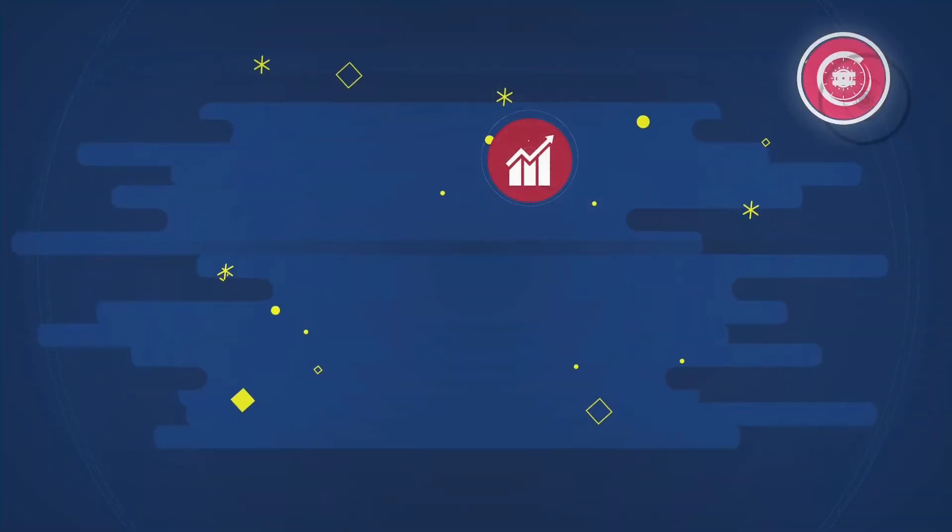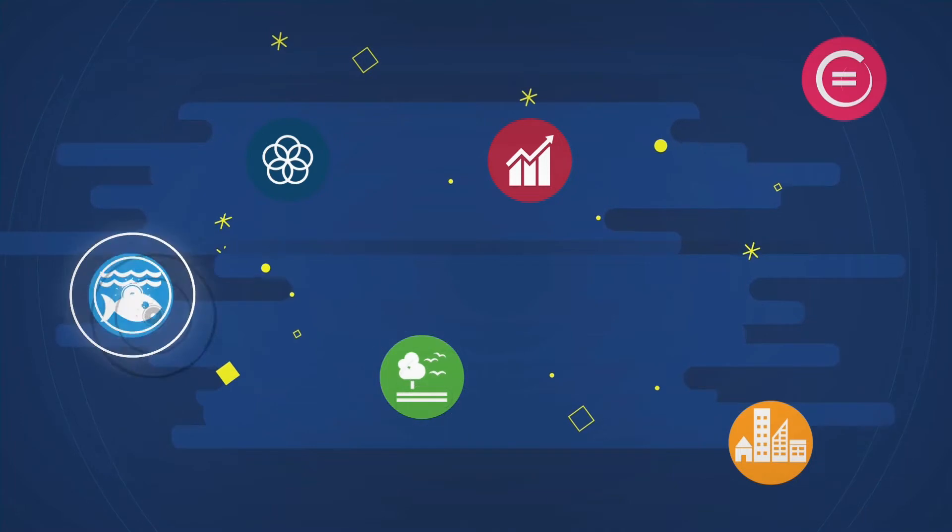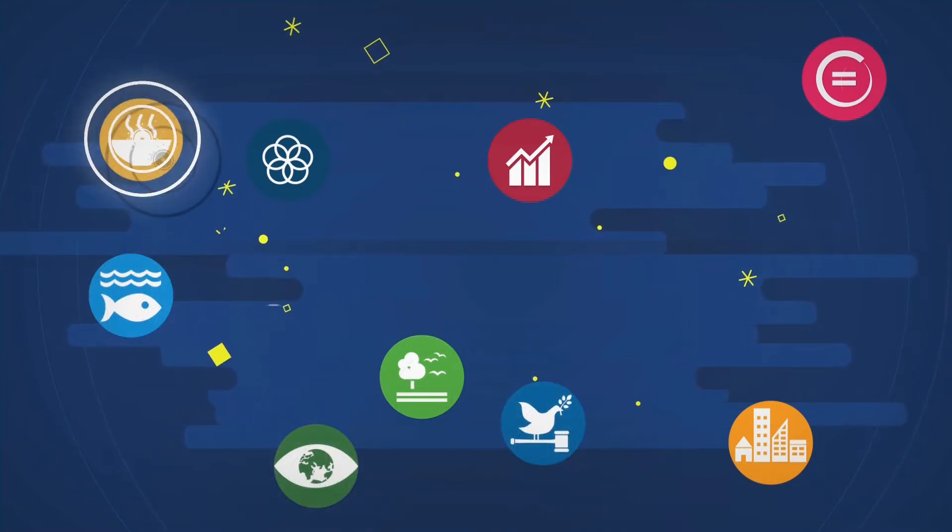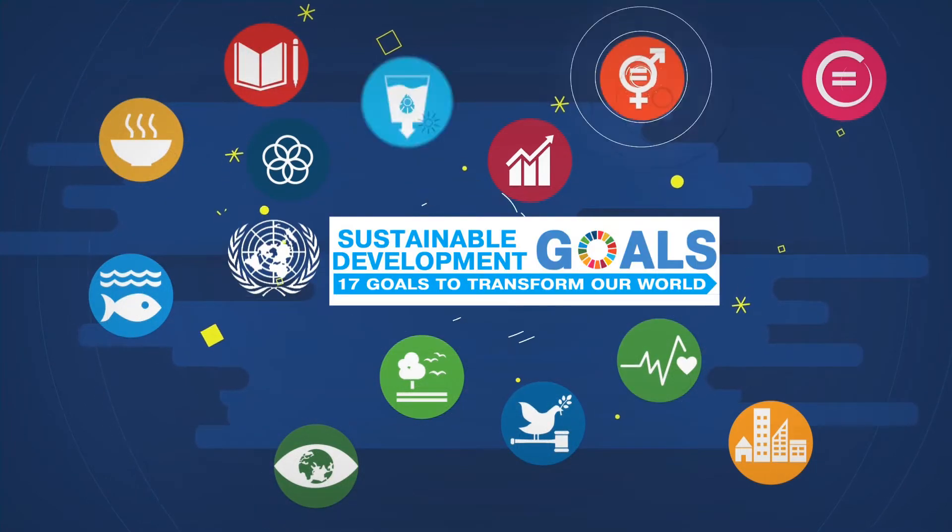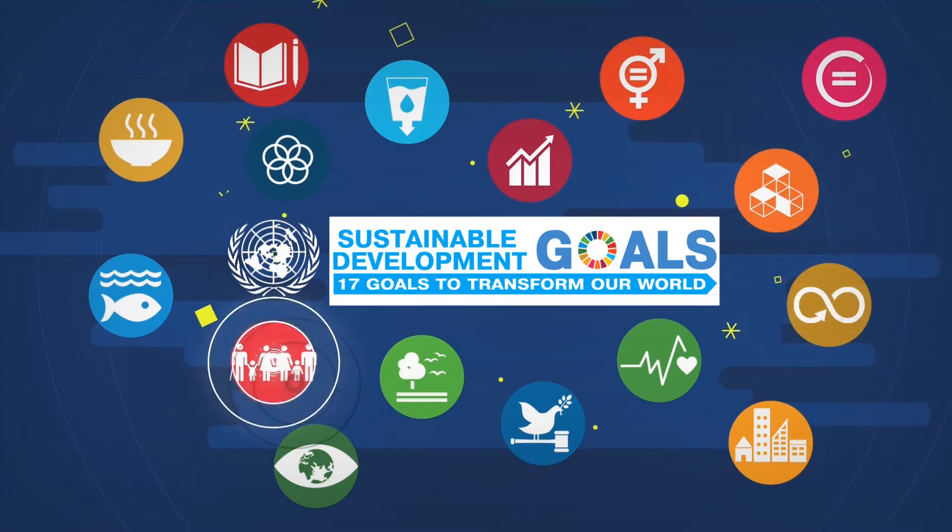In 2015, the United Nations formulated an agenda for 2030 in which science, technology, and innovation play a key role in achieving the 17 sustainable development goals.